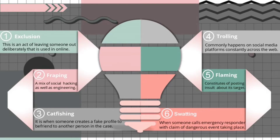The next type is catfishing. At its simplest, catfishing involves someone creating a fake profile to befriend another person — in this case, your child. Through communicating, they can acquire personal information about your child or family and use it against them. Sometimes it is used to tease or humiliate a young person; in other cases it can prove more serious, such as identity theft.